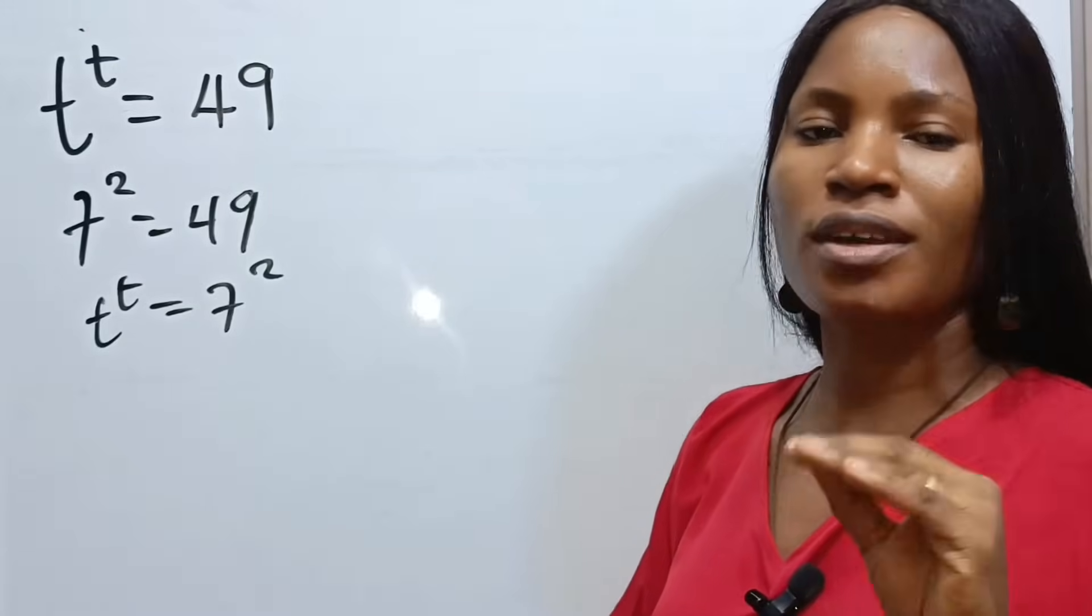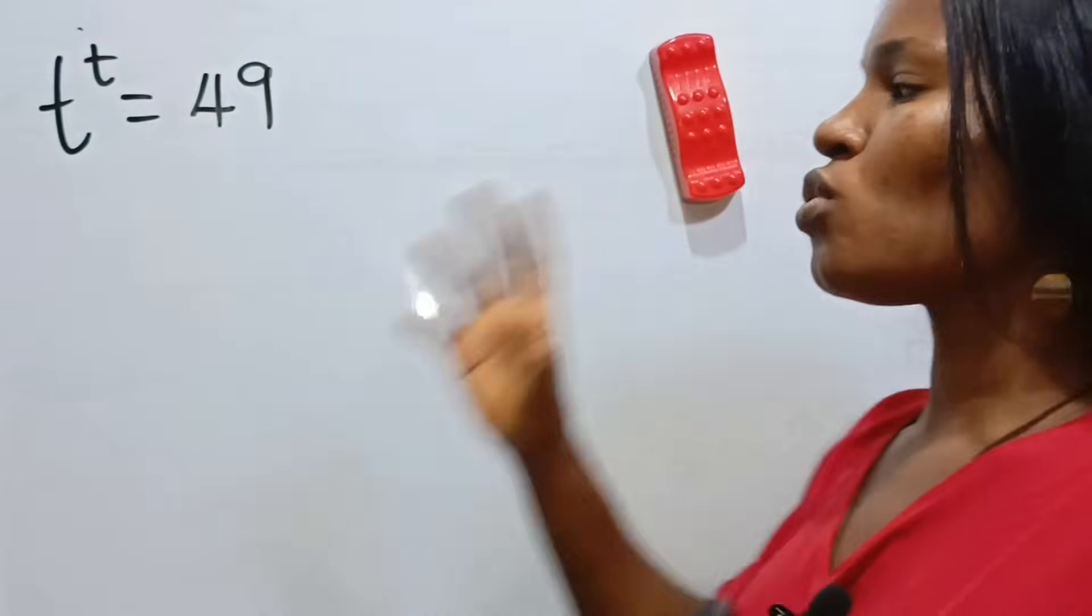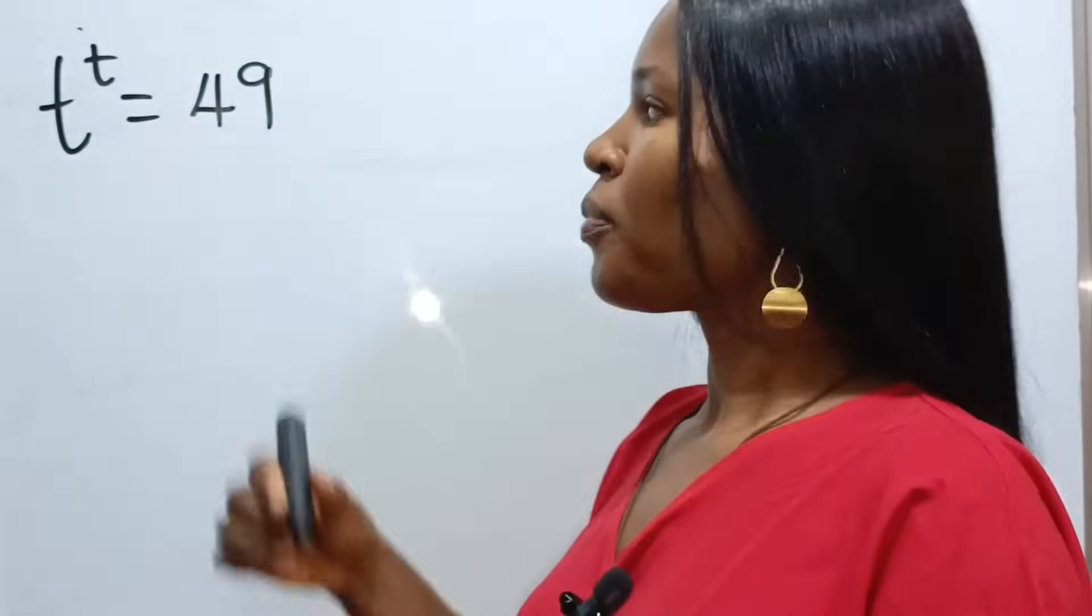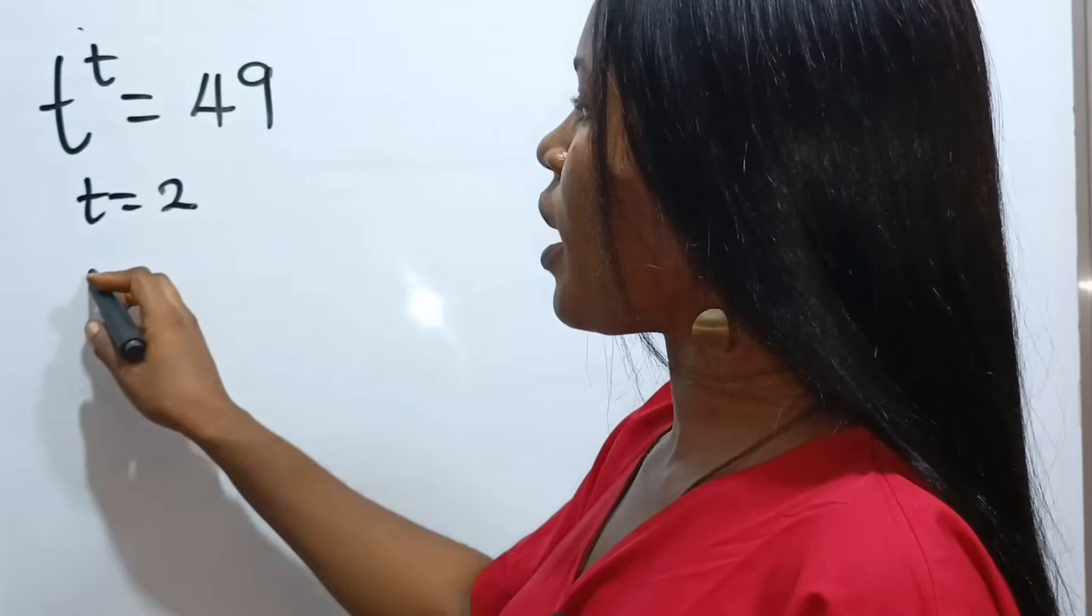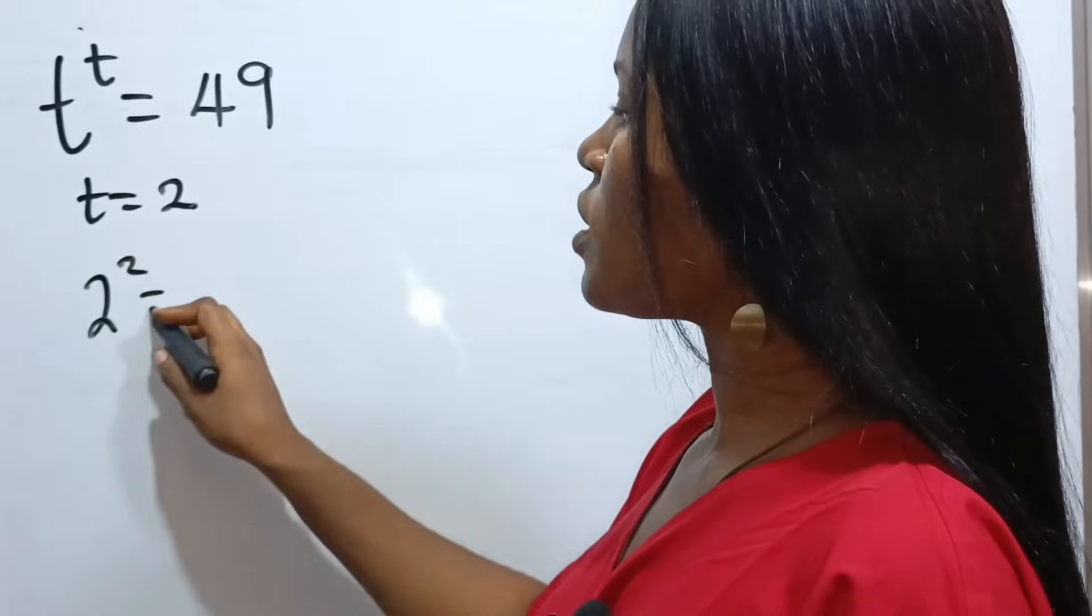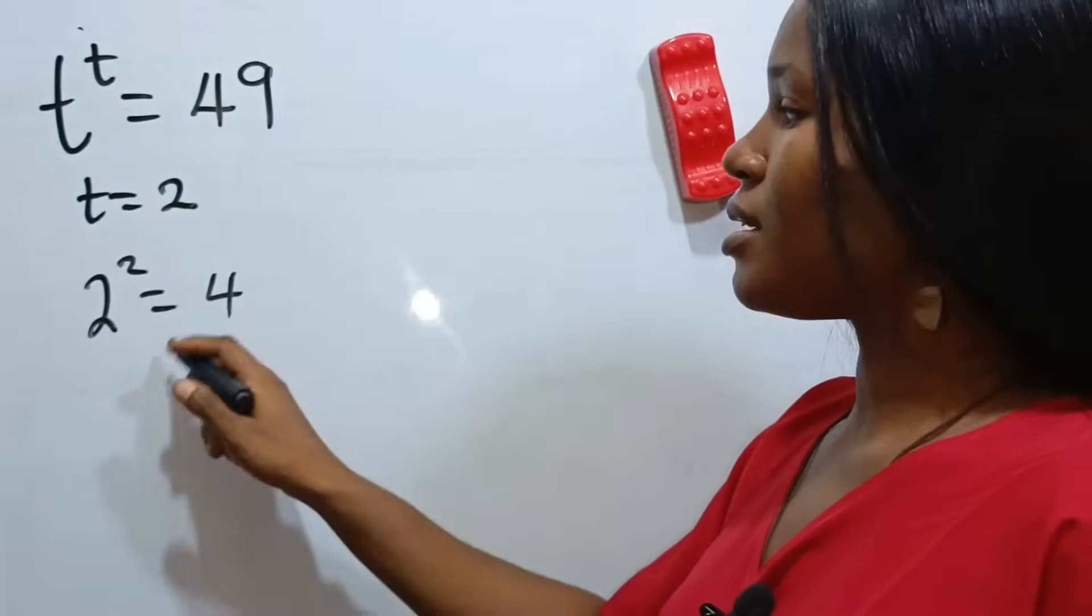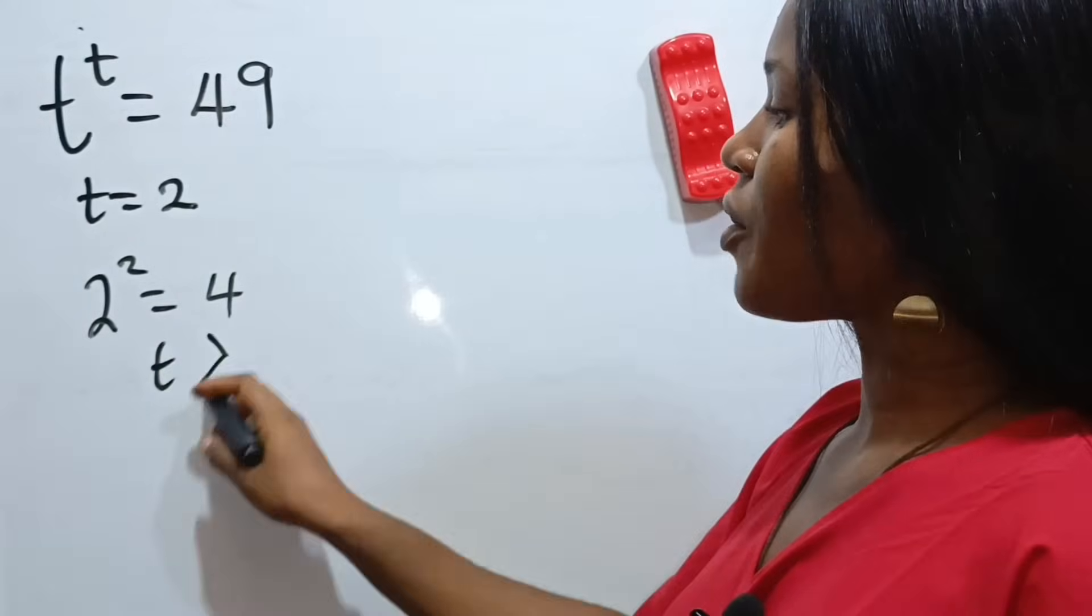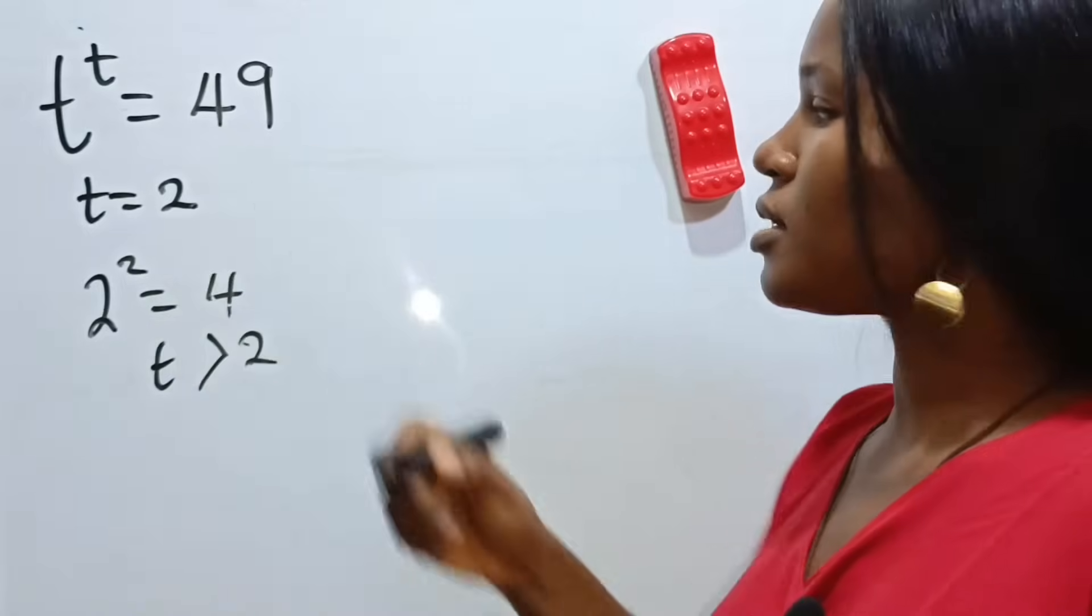Now, to solve this is not easy, but I'm going to break it down for us. First of all, let's notice that if we say t is equal to 2, that means we have 2 to the power of 2, which is equal to 4. That means our t, this simply means that this t is greater than 2, because what we are looking for is 49.